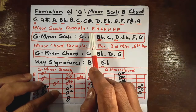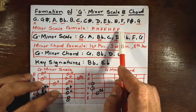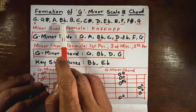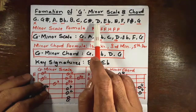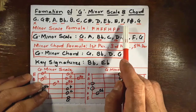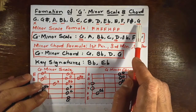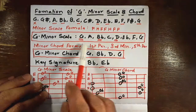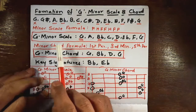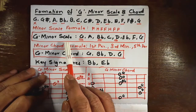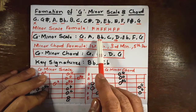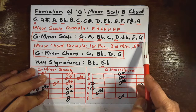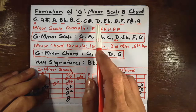After applying this minor scale formula to the chromatic scale, the notes that we get are G, A, B flat, C, D, E flat, F, and G. After we collect these underlined notes separately, we get the G minor scale: G, A, B flat, C, D, E flat, F, and G.